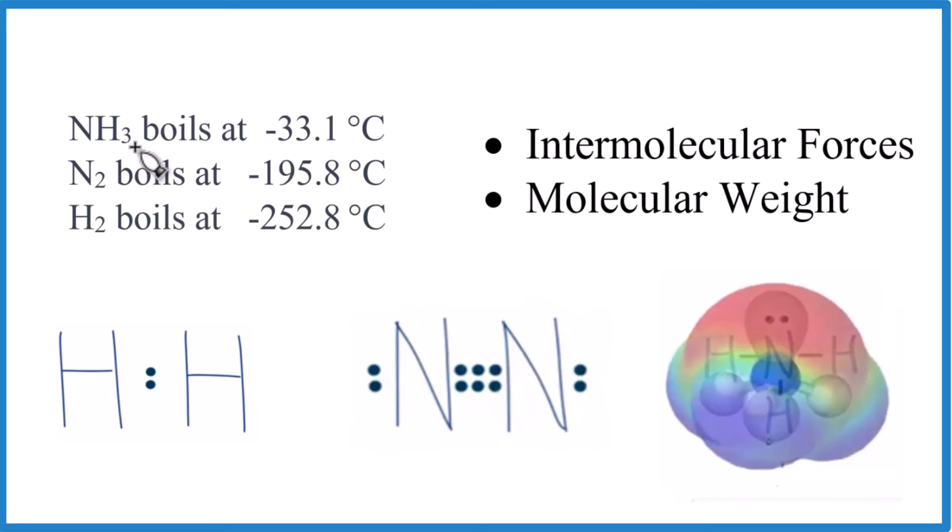That's how we can classify or order these three molecules - NH3, N2, and H2 - by boiling point. Looking at the intermolecular forces, in particular that hydrogen bonding with ammonia, and then looking at the molecular weights of these two nonpolar molecules.